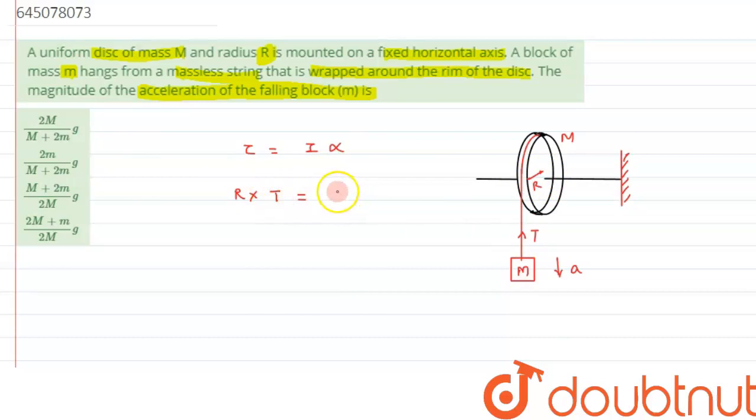Since the axis of rotation is passing through the center and perpendicular to its plane, the formula is MR²/2. From here, we can write the angular acceleration α as 2T/MR. Let's say this is equation 1.